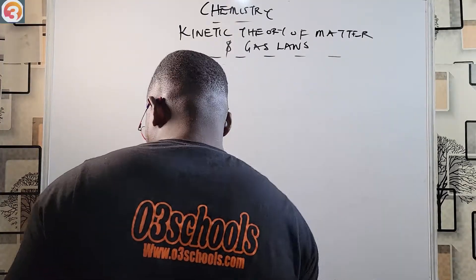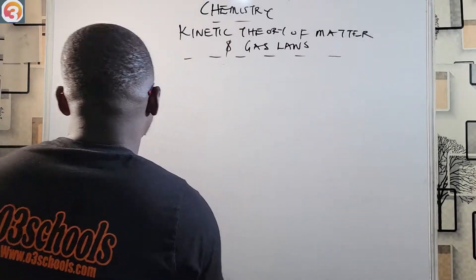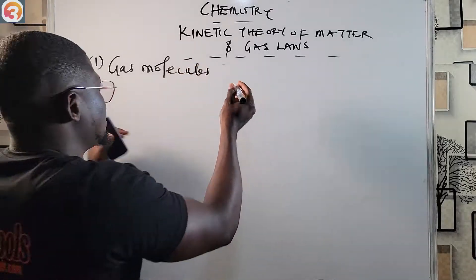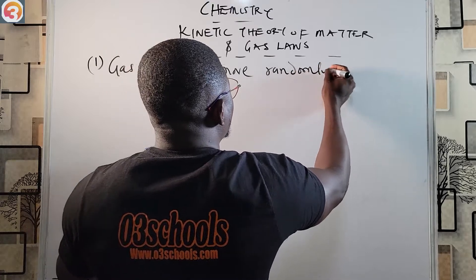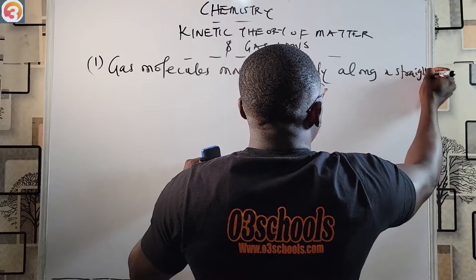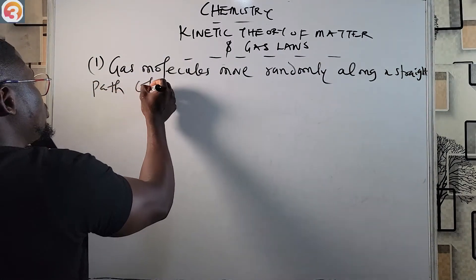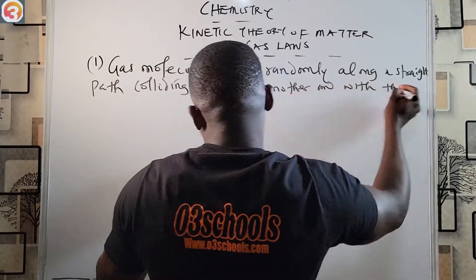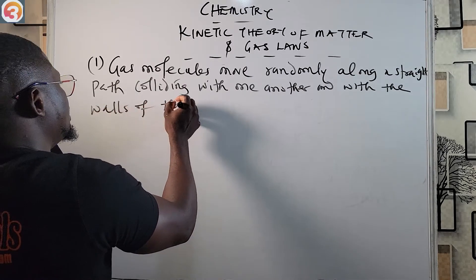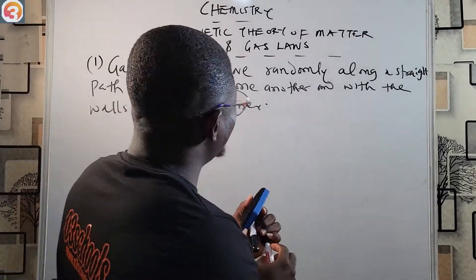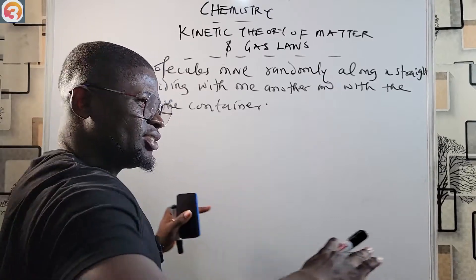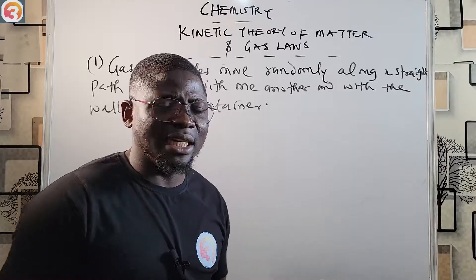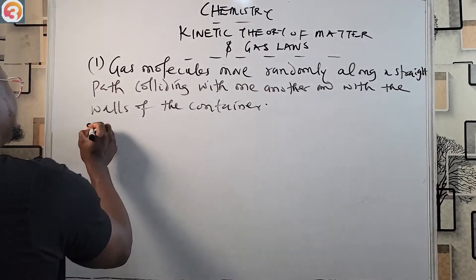Because kinetic theory of matter studies ideal gases, it has some assumptions you should know. The first assumption is that gas molecules move randomly along a straight path, colliding with one another and with the walls of the container.